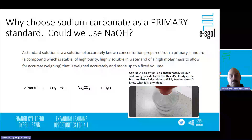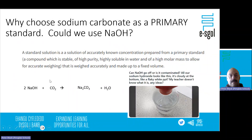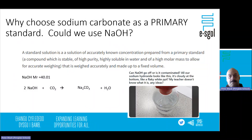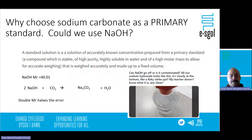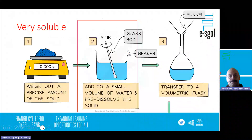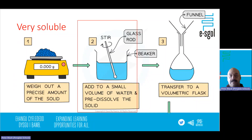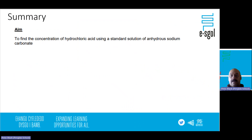There's another issue with sodium hydroxide as a primary standard: its Mr is only 40.1. The lower the Mr, the bigger the error in weighing. Ideally you want as large an Mr as possible — if you double the Mr, you halve the error in weighing. That's another reason we've chosen sodium carbonate as our primary standard. In summary, that is why we're standardising hydrochloric acid and why we're using sodium carbonate to do that.